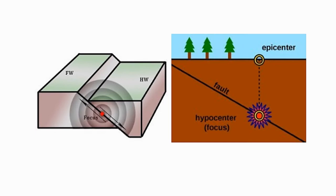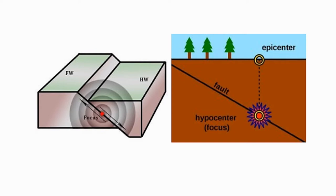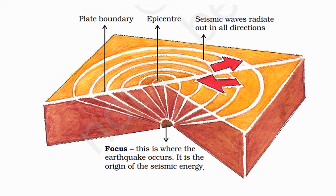Looking at this diagram, we can see there is a focus point, an epicenter on the surface, and movement happens along the fault. There is a particular focus of wave generation, and on the surface there is an epicenter, mostly along the fault boundaries or plate boundaries.